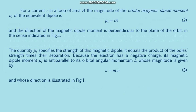The direction of the magnetic dipole moment is perpendicular to the plane of the orbit in the sense indicated in figure one. The figure shows the magnetic field produced by the current loop and also indicates the two fictitious poles of a dipole that would produce a magnetic field identical to the actual field far from the loop. Because the electron has a negative charge, its magnetic dipole moment μ_L is antiparallel to its orbital angular momentum L, whose magnitude is L = mvr, formula three.